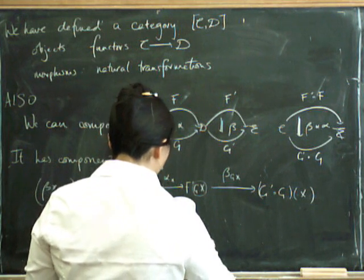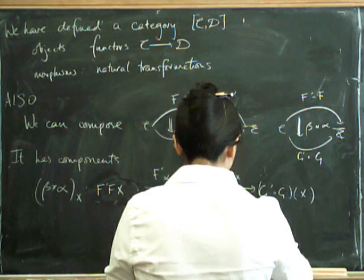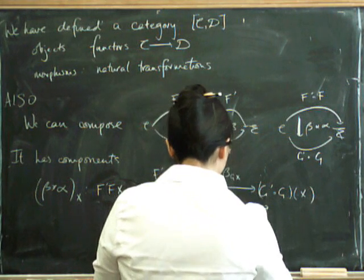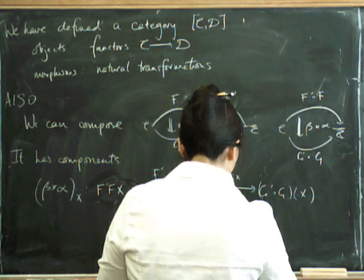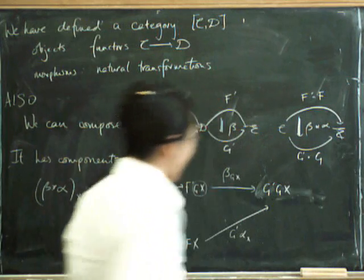And we could do the component of beta at F of X. And that will take us to G prime of F of X. And now we can use G prime of alpha at X, which gets us to G prime of G of X.